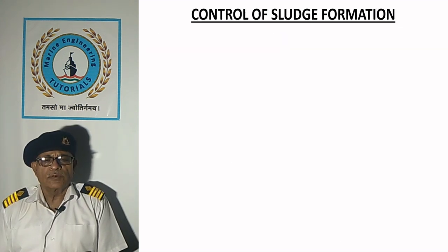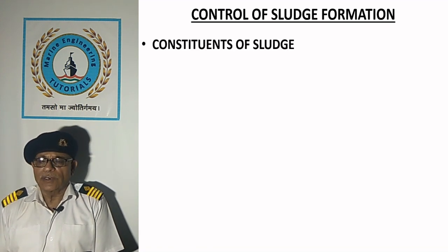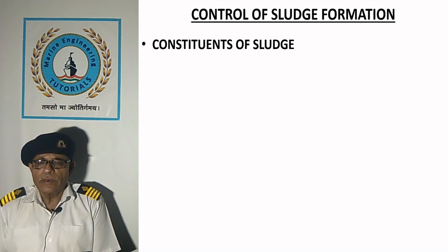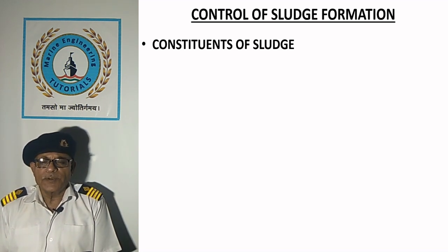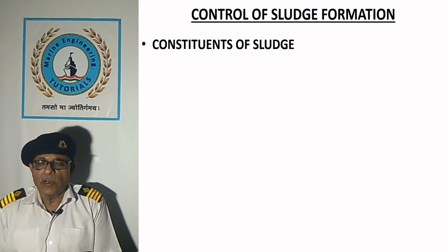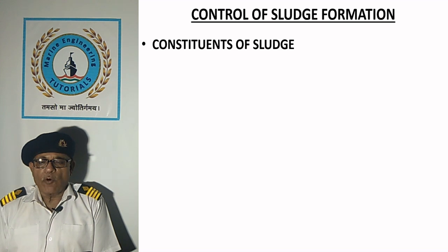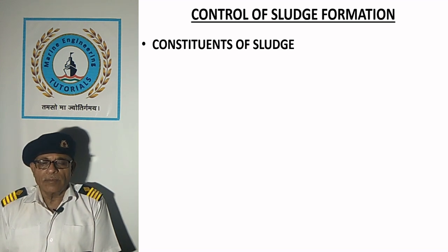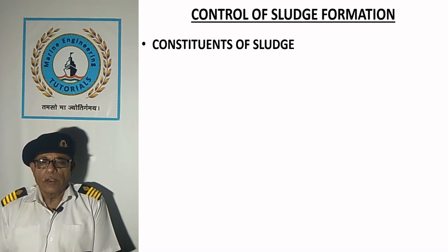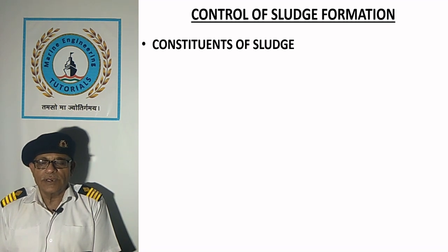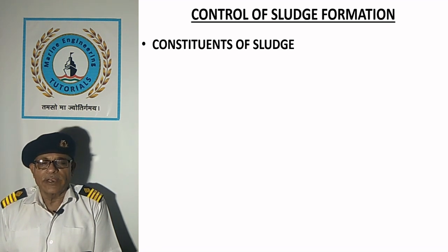Control of sludge formation. Constituents of sludge: salts suspended in water or precipitated by chemical reaction can form sludge in the boiler. Similarly, if oil gains entry into the boiler it also forms sludge on heat transfer surfaces. Deposition of sludge on heat transfer surfaces reduces heat transfer greatly, resulting in rupture of tubes due to overheating.